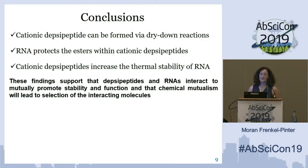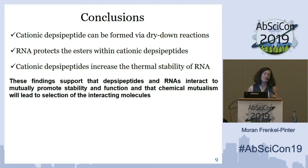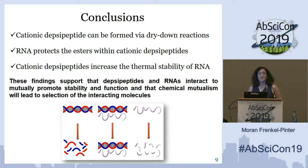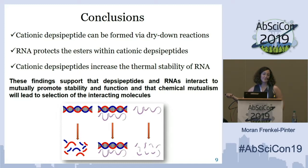To conclude, we have shown that cationic depsipeptides can be formed via dry-down reactions very robustly and selectively. In addition, RNA protects the esters within cationic depsipeptides, and we also found that cationic depsipeptides can increase the thermal stability of RNA. Overall, these findings suggest that cationic depsipeptides and RNA mutually interact to promote each other's structure and function — they protect each other. The takeaway message is that interactions between different types of polymers were very important in shaping chemical evolution, because together they are more stable and thus will be selected for.